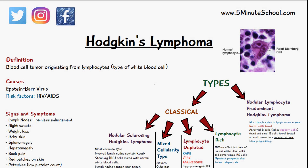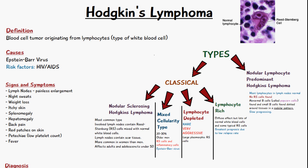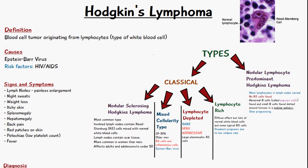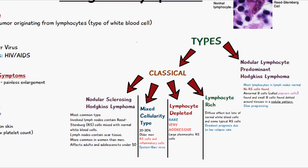In today's video we're going to be talking about Hodgkin's lymphoma, which is a blood cell tumor that originates from lymphocytes, a type of white blood cell. The causes of Hodgkin's lymphoma are various, but it can be due to the Epstein-Barr virus. There are other risk factors as well, including genetic reasons — if someone in your family has had Hodgkin's lymphoma you're more likely to get it — and other risk factors include HIV and AIDS.